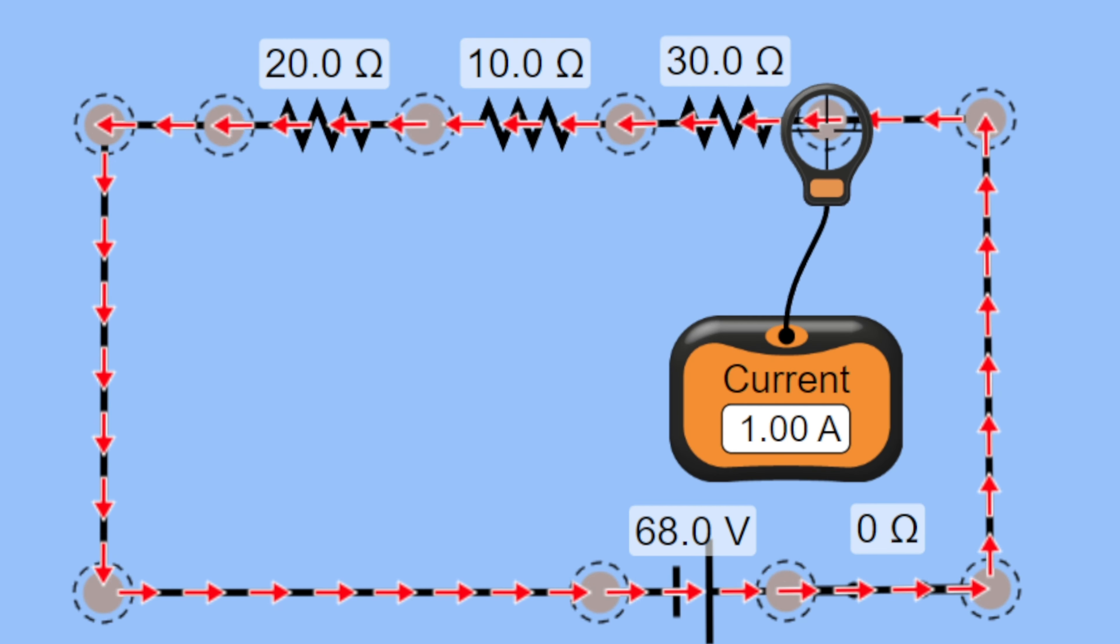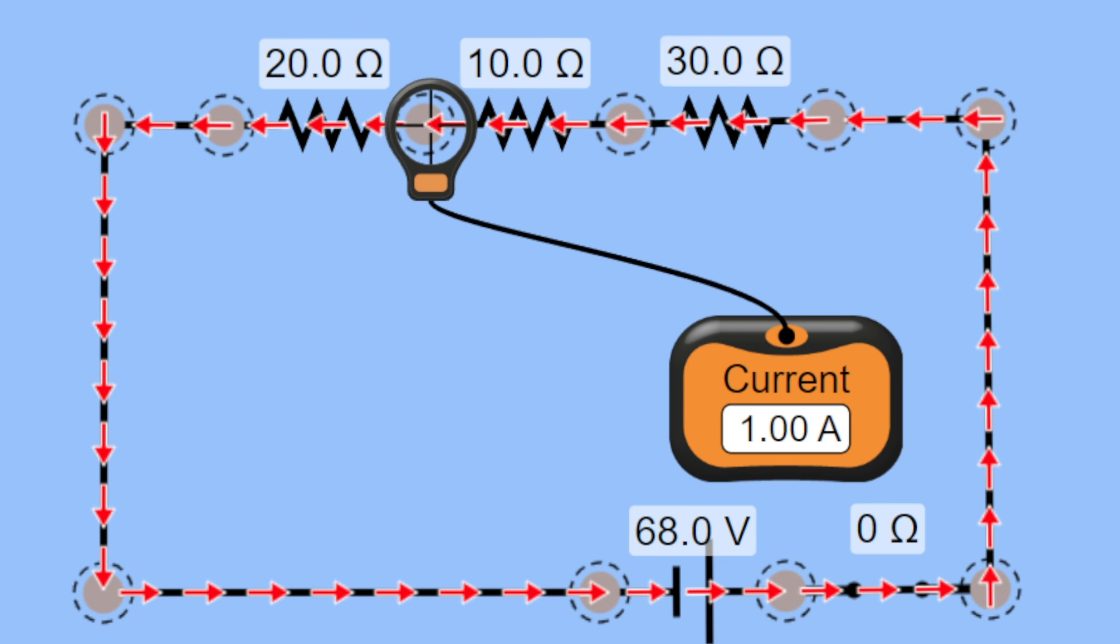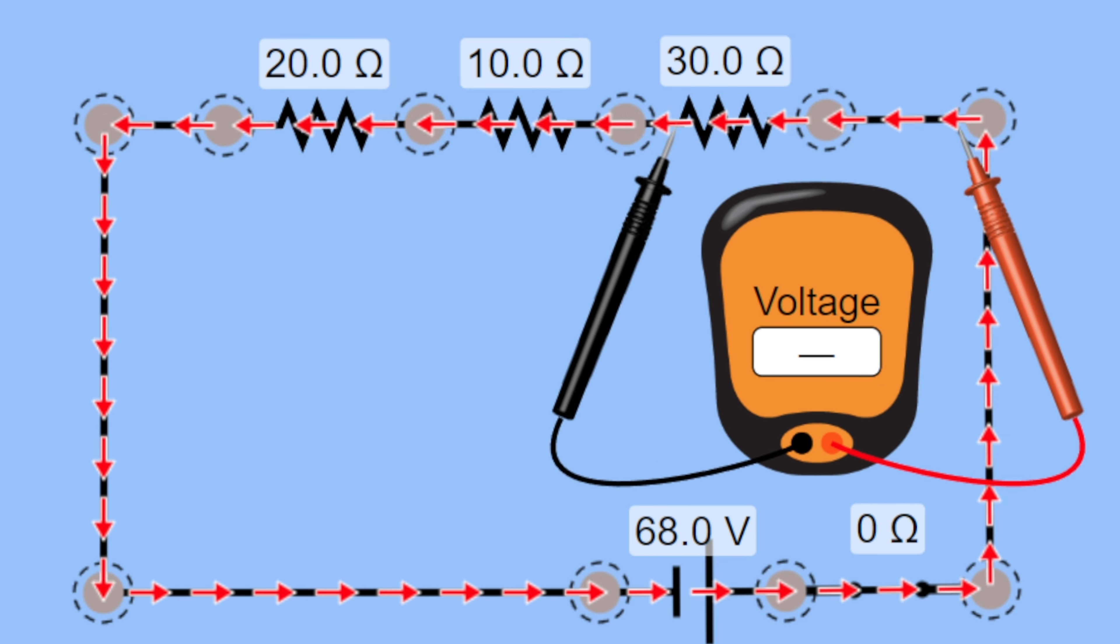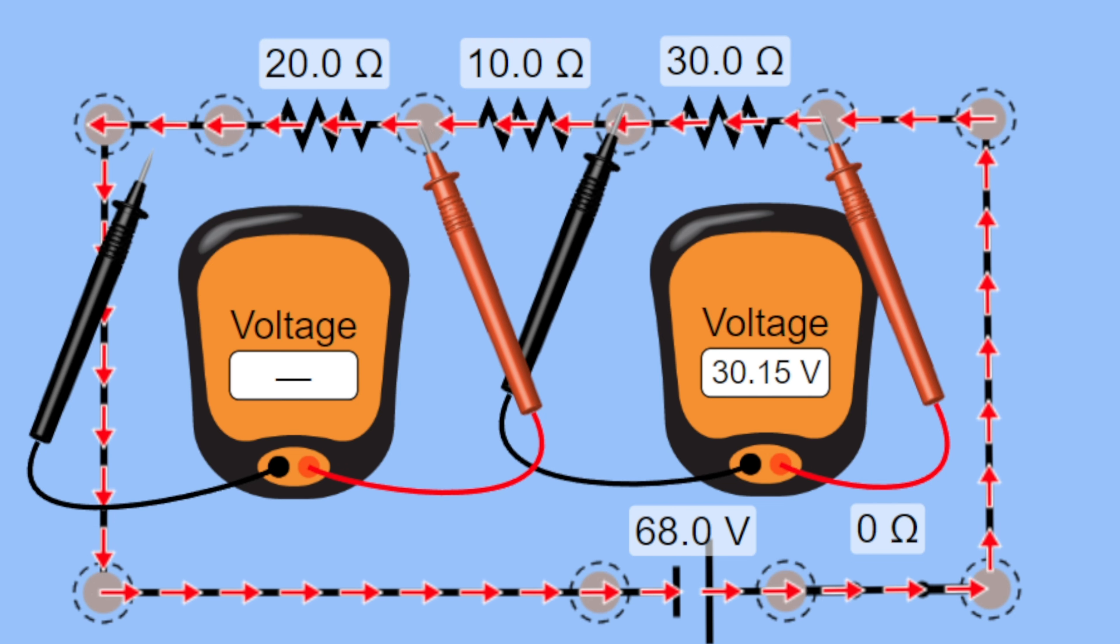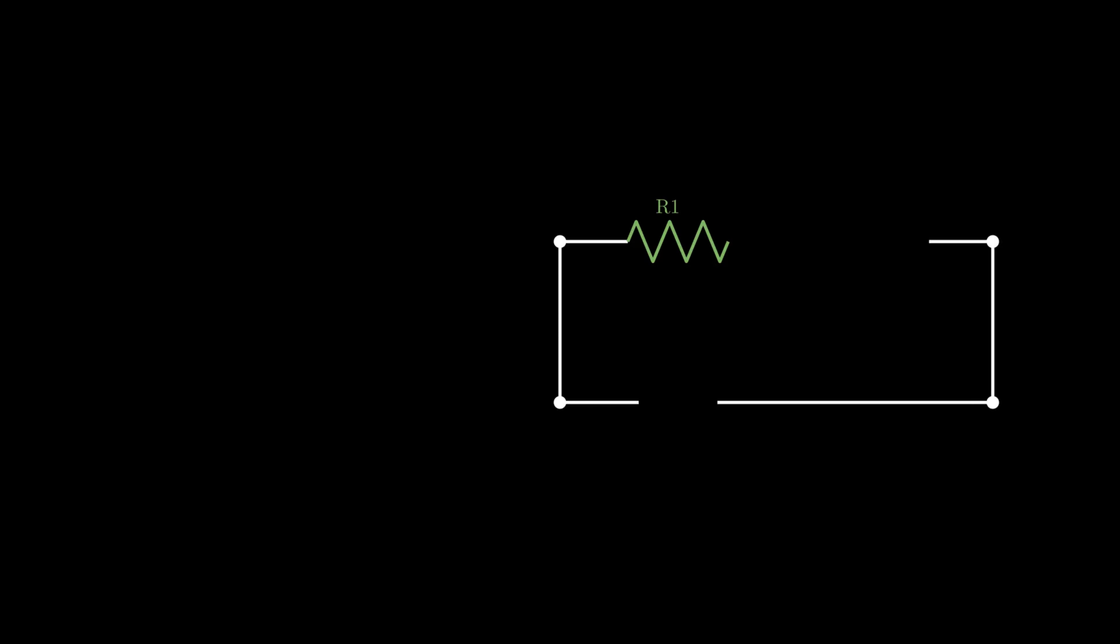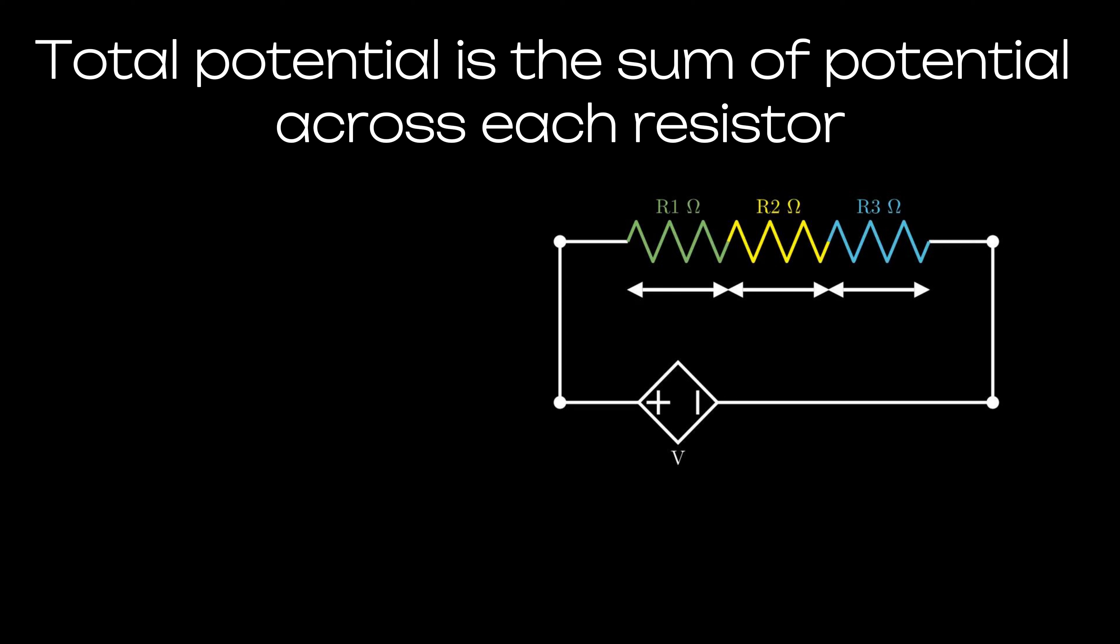In this case the current through each resistor remains the same while the potential across them is variable. As potential is different across each resistor, the total potential across the connection is the sum of potential drops across each resistance.